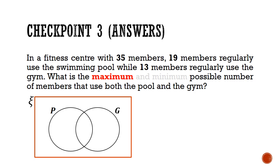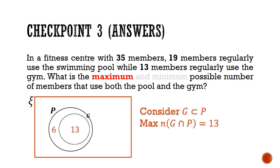Now for the solution. This is a problem that challenges us to consider the extreme cases. So once again, let's begin with the Venn diagram, where the universe consists of all 35 members. Set P are the pool users, and set G are the gym users.